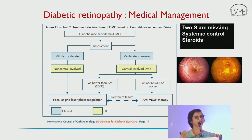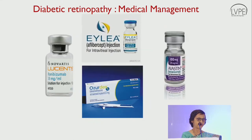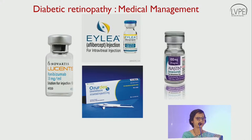In patients who have already undergone cataract surgery, we might go for steroids as a first layer of management because there is no risk of cataract progression. The anti-VEGF agents include ranibizumab and aflibercept. The implant shown here is a steroid implant.